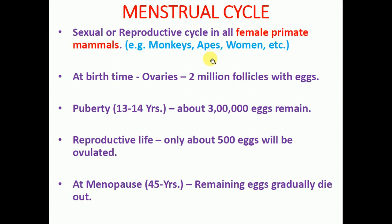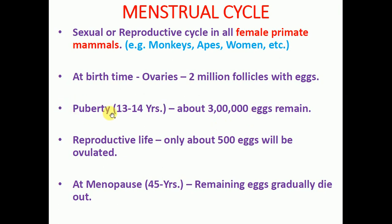Before understanding the details about the menstrual cycle, we have to remember some introductory points. At birth, a girl child contains near about 2 million follicles — that is about 20 lakh follicles — each with an egg or ovum in the ovaries. During puberty, which begins around 13 to 14 years of age in India, the eggs become degenerated and only near about 3 lakh eggs remain. Then, throughout the total reproductive life from puberty up to menopause, only near about 500 eggs will be ovulated for fertilization.